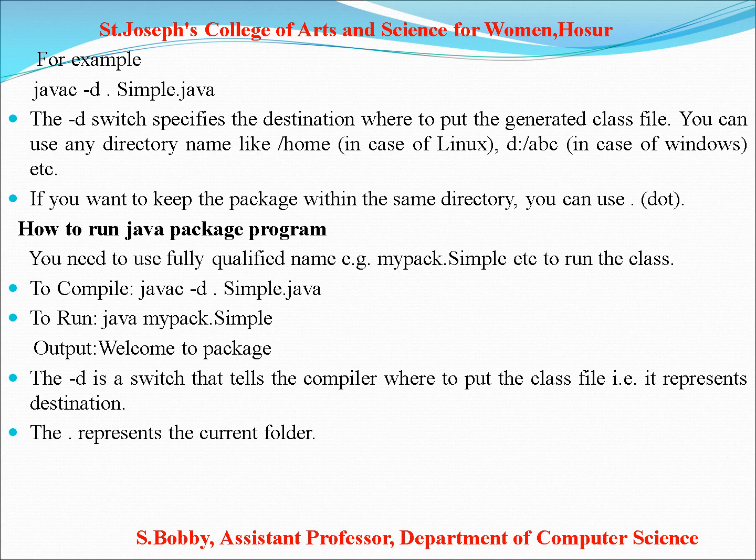If you want to keep the package within the same directory, you can use dot. The next step is how to run the Java package program — you need to use the fully qualified name, for example mypack.Simple. To compile: javac -d . simple.java. To run: java mypack.Simple. The output is 'Welcome to package'. Here, -d is the switch telling the compiler where to put the class file, and dot represents the current folder.